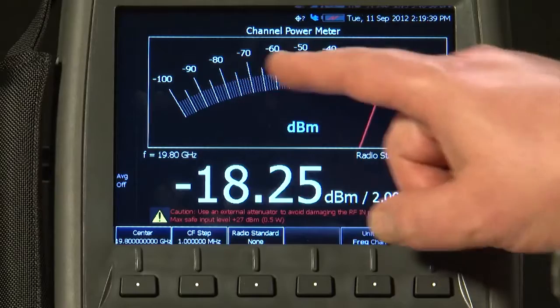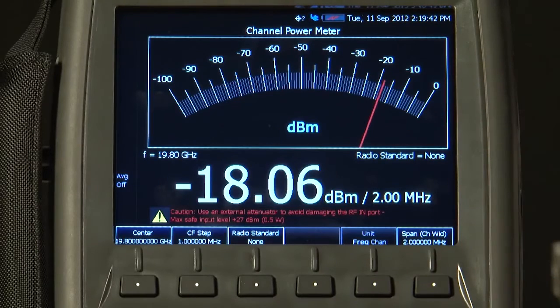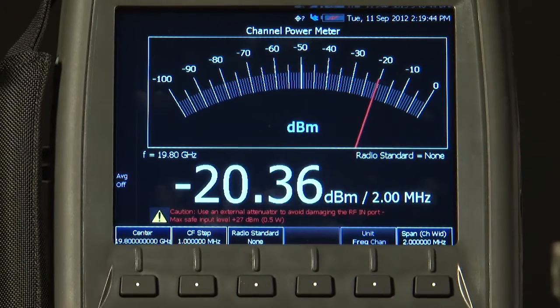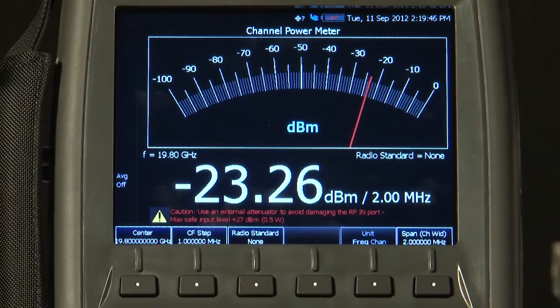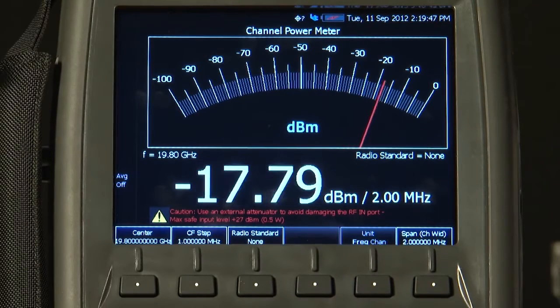And as you can see, we have got an analog display here. So if the level of the RF signal is going up or down, we can see that displayed if we are trying to peak an antenna, for example.